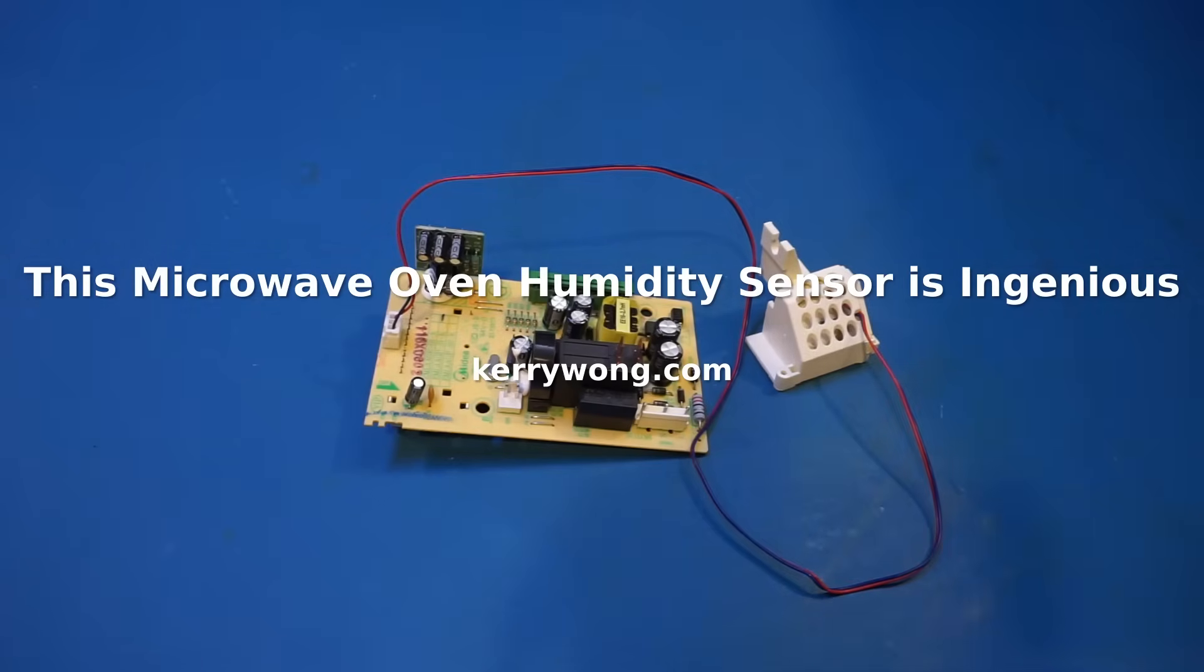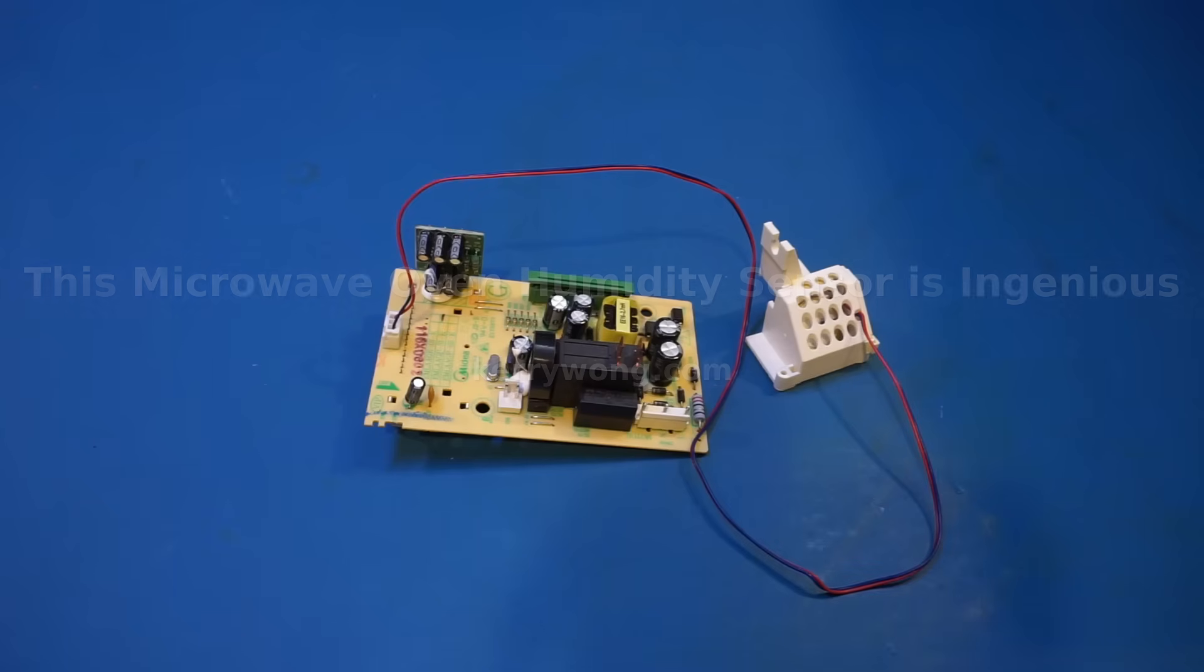I was going through my component bins trying to find a replacement relay and found this circuit board assembly. I actually recognized this board as it was from my GE microwave that I've had for close to 10 years.